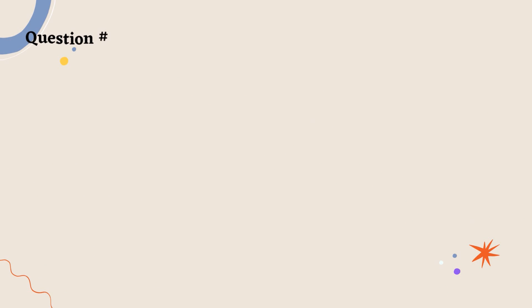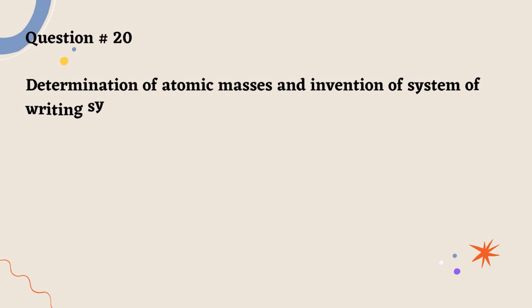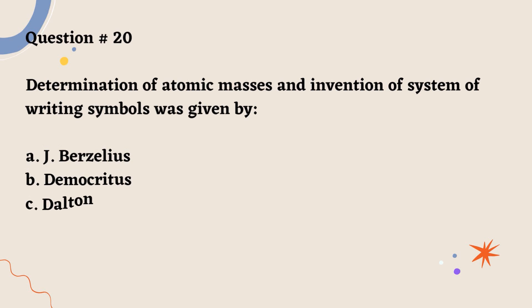Question number 20. Determination of atomic masses and invention of system of writing symbols was given by: A. J. Berzelius. B. Democritus. C. Dalton. D. None of above. Correct option is A.